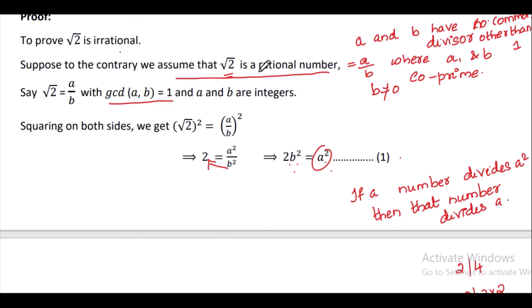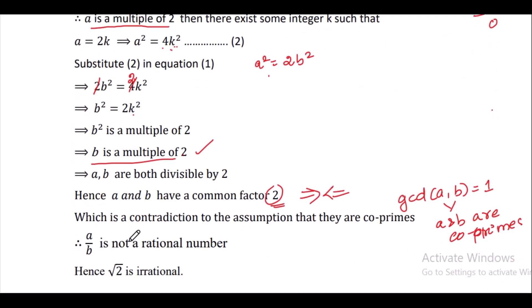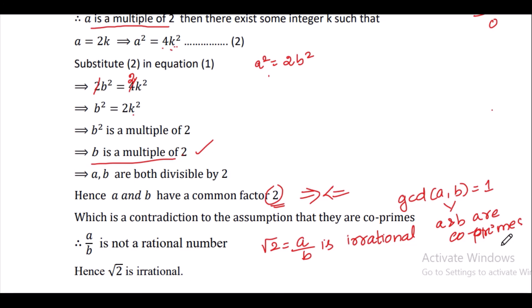Therefore, our assumption that square root of 2 is rational is false, which means square root of 2 is irrational.